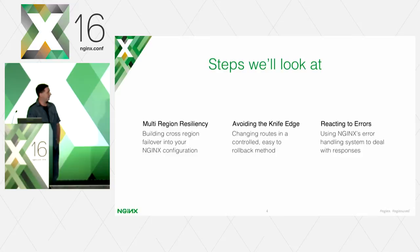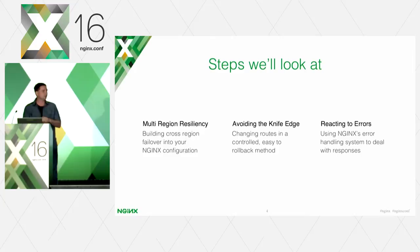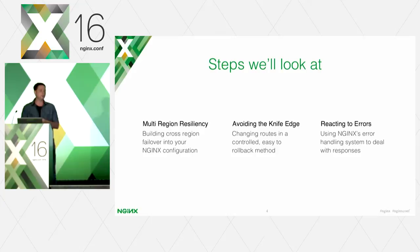Let's go into what I want to really talk about today: three pillars that we built our cloud migration up onto. The first is multi-region resiliency — how we use Nginx to build cross-regional failover into our Nginx configurations so that we don't have to deal with manual intervention. If something goes down in one region we auto failover to the other.